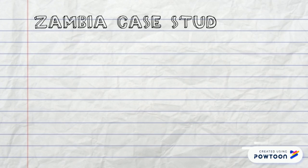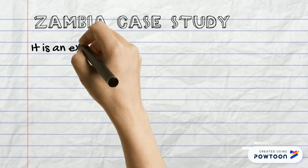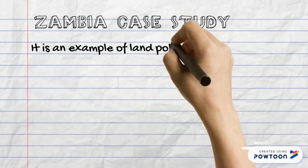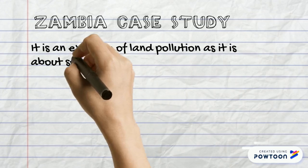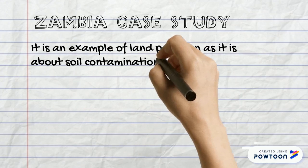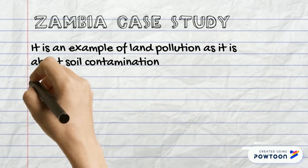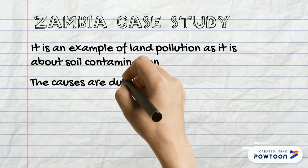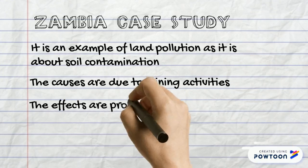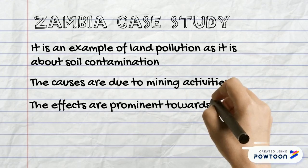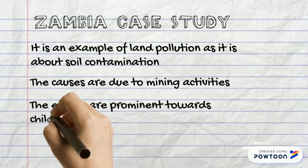Zambia case study — it is an example of land pollution involving soil contamination. The causes are due to mining activities, and the effects are prominent towards children.